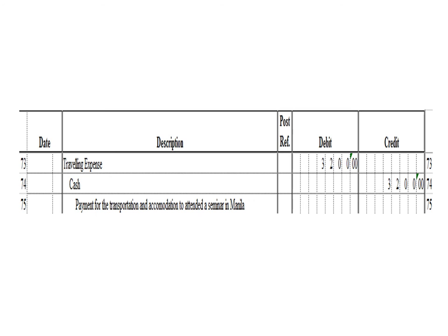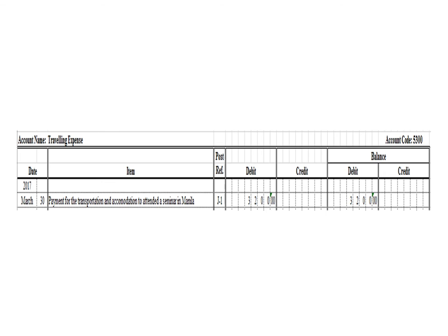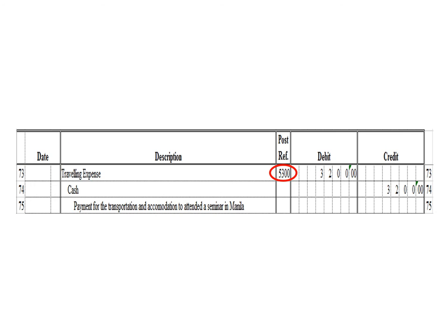Next transaction: a debit to traveling expense 3,200 pesos and a credit to cash 3,200 pesos. In the traveling expense ledger, we write date March 30, description: payment for transportation and accommodation to attend a seminar in Manila, posting reference J1. Under the debit column, write 3,200 pesos, and in the balance section under debit, write 3,200 pesos. After posting, write the posting reference 5300, the account code for traveling expense.